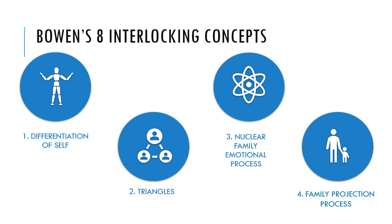Two: Triangles. Triangles are the smallest stable unit within a relationship. When there is stress between two people, it can be diminished by involving a third party where the tension can be transferred. Three: Nuclear family emotional system — four patterns of functioning within a single generation: dysfunction in one spouse, marital conflict, impairments in a child or children, and emotional distance. The current generation uses the past generation as an example; if there is dysfunctional behavior, it will continue to be passed down to younger generations.